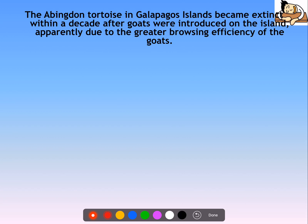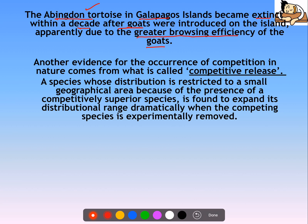For example, the Abington tortoise in the Galapagos Islands became extinct within a decade after goats were introduced on the island, because of the greater browsing efficiency of the goats, which decreased the tortoise's feeding efficiency. Then there is the concept of competitive release: if a species whose distribution is restricted to a small geographical area due to the presence of a competitively superior species expands when that other species is removed, this phenomenon is called competitive release.